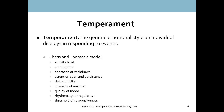Chess and Thomas did the first major study that really took a good look at temperament as a variable. It was known as the New York Longitudinal Study. It was longitudinal, meaning they followed their subjects over the span of years — they started with infants and watched them until adulthood, so this study spanned decades.